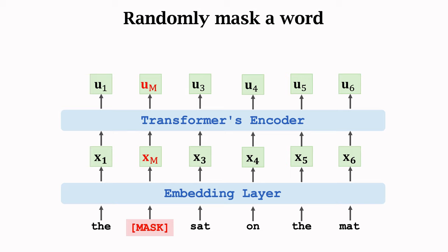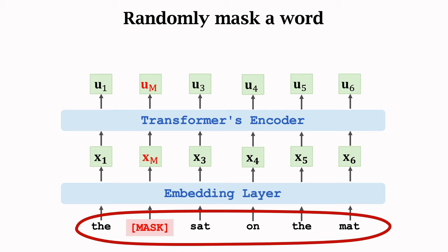The output in the masked position is vector um. While um is at the masked position, it is computed based on the entire input sentence. The context is captured by um. We can therefore use um for predicting the masked word.